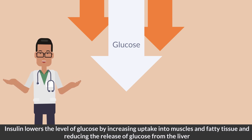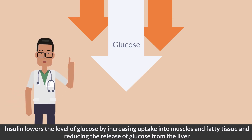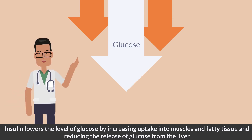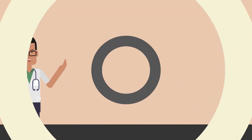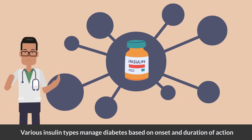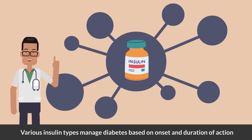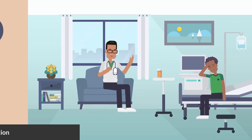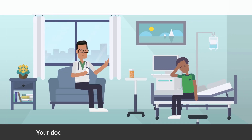Insulin lowers the level of glucose by increasing uptake into muscles and fatty tissue, and reducing the release of glucose from the liver. Depending on the onset and duration of action, different kinds of insulin are available to manage diabetes. Your doctor can help you choose the best insulin regimen for you.